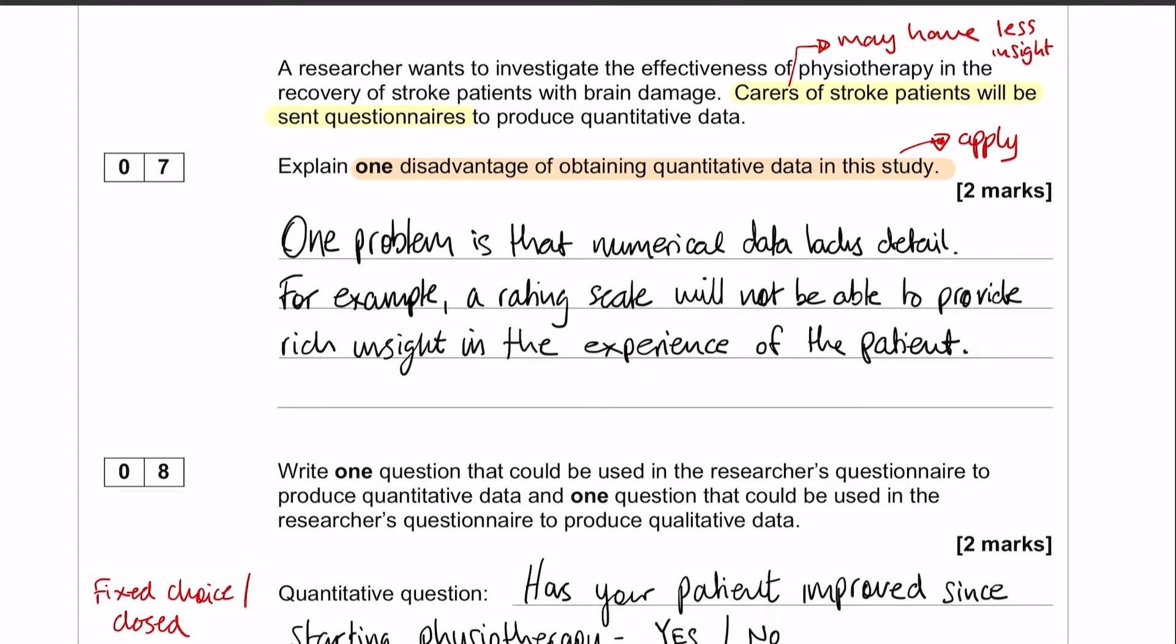So we're going to start off identifying the problem with quantitative data, so numerical data lacks detail, and then I'm going to follow that up with an application sentence. In this case, it's going to be an example, but it's going to be an application nonetheless. So, for example, a rating scale isn't going to be able to provide rich insight into the experience of the patient.